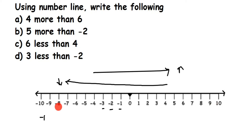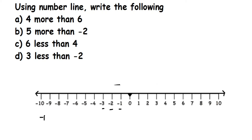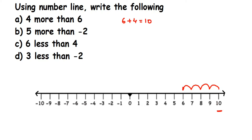The first question says four more than six. Let us locate six on the number line — six is here. Four more means we have to add four to six, so we move: 1, 2, 3, 4 — and we end at 10. So four more than six, the answer is 10. When writing this: four more than six is 4 plus 6, or you can write 6 plus 4, which equals 10.